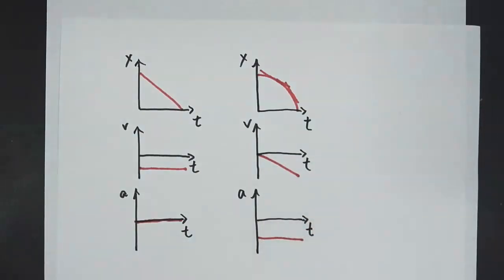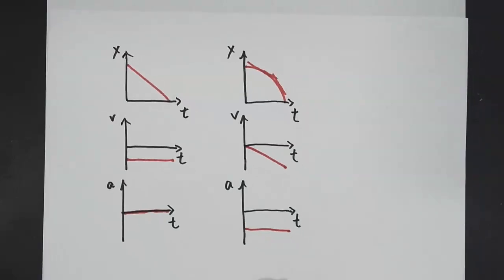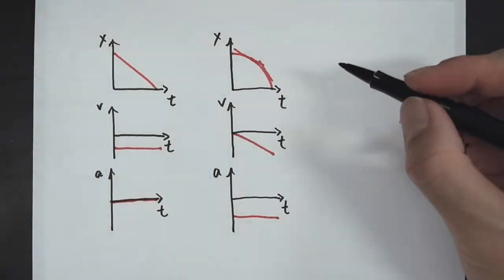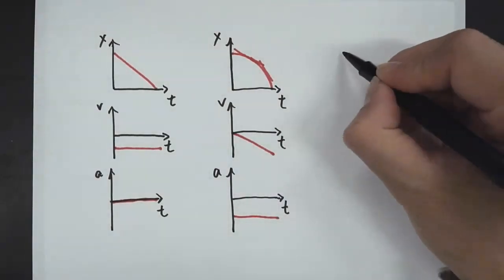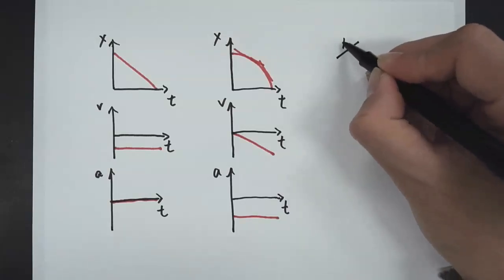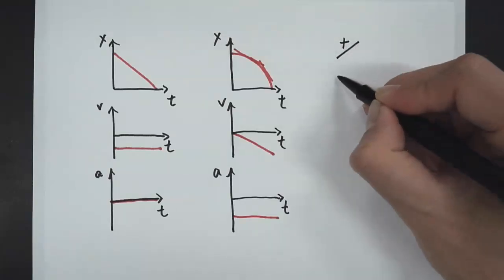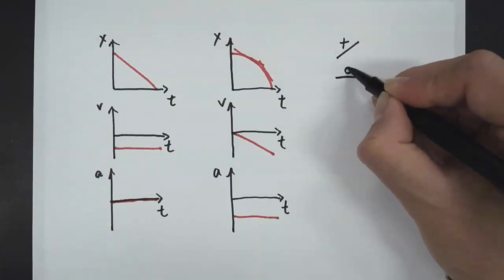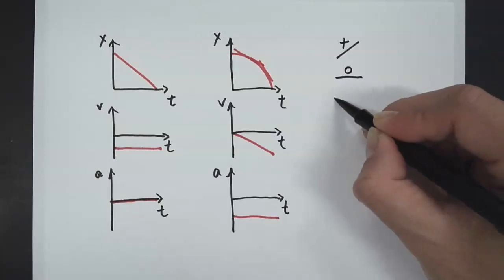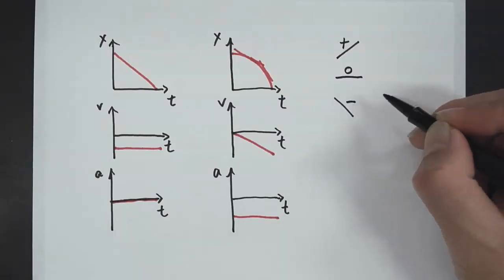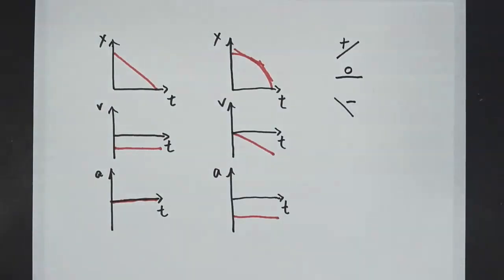A quick note about positive and negative slope: when a slope is uphill, that's a positive slope. If it's flat, that's a zero slope. If it's going downhill, that would be a negative slope.